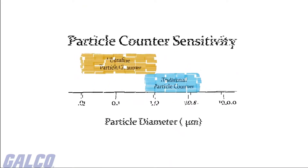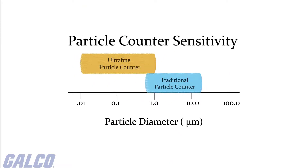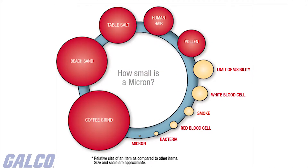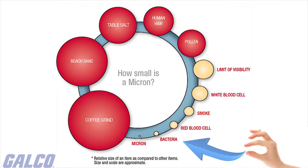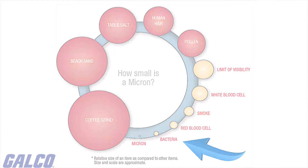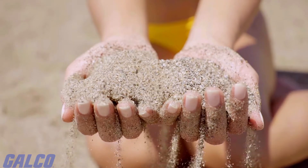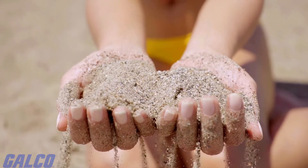An airborne particle counter's sensitivity is determined by the size of the smallest particle it can detect, and they typically have sensitivities of 0.1, 0.3, or 0.5 micron. The greater the sensitivity, the smaller the particles it can detect. For scale, particles that are 0.1 micron are smaller than bacteria, which starts at 0.3 microns. Even the finest grain of sand is 75 microns.